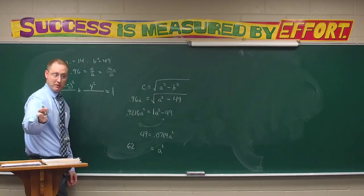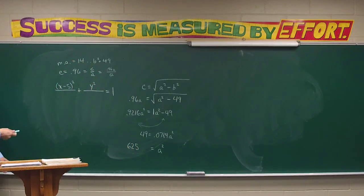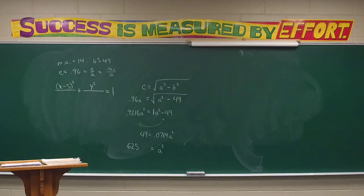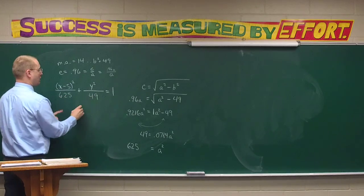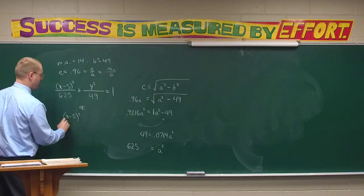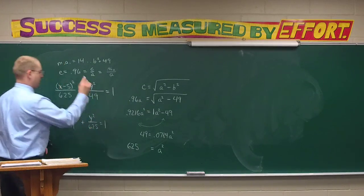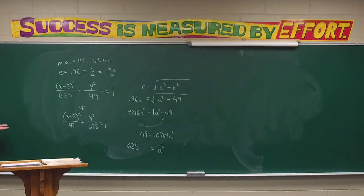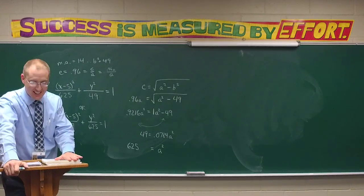A squared comes out evenly to 625. So now the question is: which is major? They didn't give us enough information to know, so I actually have two equations: 625 goes here and 49 there, or 49 here and 625 there. So that wasn't so bad — we've got letter D done, and I think we even got letter F there.